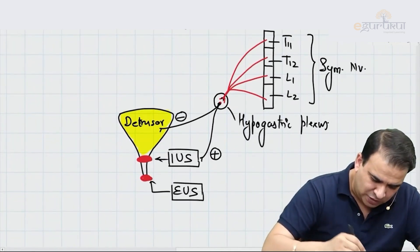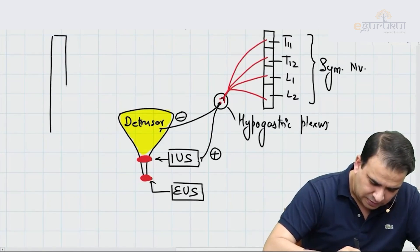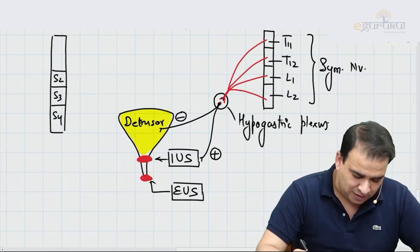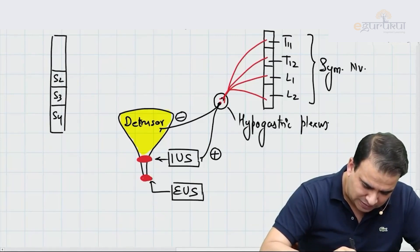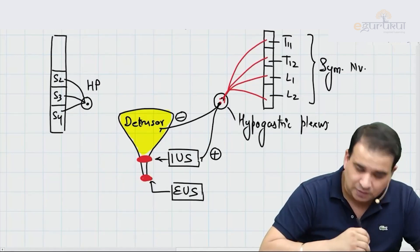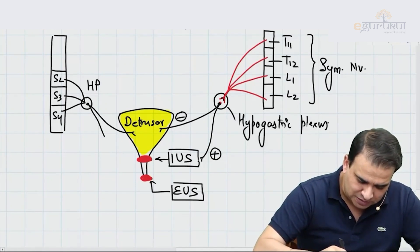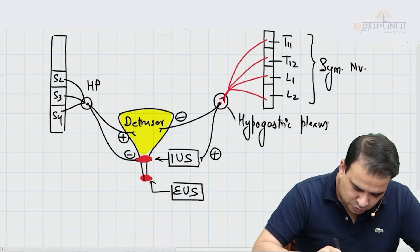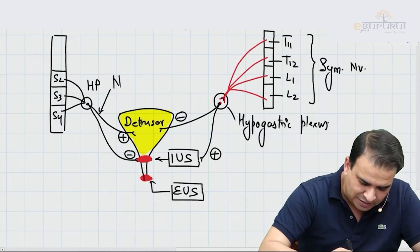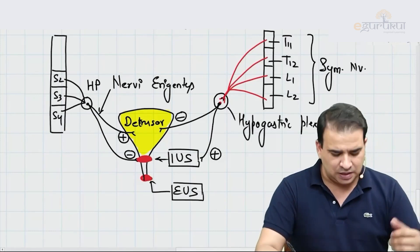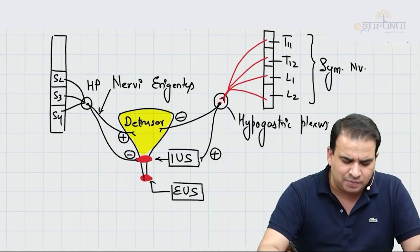The parasympathetic nerves come from S2, S3, and S4 — the pelvic splanchnic nerves. These also contribute to the hypogastric plexus. From the hypogastric plexus, exactly opposite to the sympathetic, they are excitatory to the detrusor muscle and inhibitory to the internal urethral sphincter. These pelvic splanchnic nerves from S2, S3, and S4 form the nervi erigentes, which are excitatory to the detrusor and inhibitory to the internal urethral sphincter.